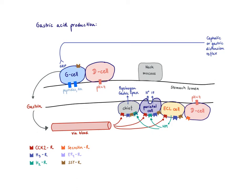In this video, I want to talk about the regulation of gastric juice secretion. We start making gastric juice already during the cephalic phase, when there are some reflexes — I'm going to release GRP, gastrin-releasing peptide, onto the G cell. The G cell makes our gastrin.